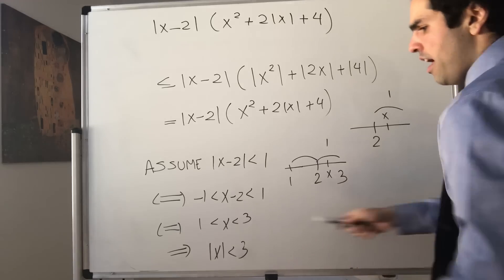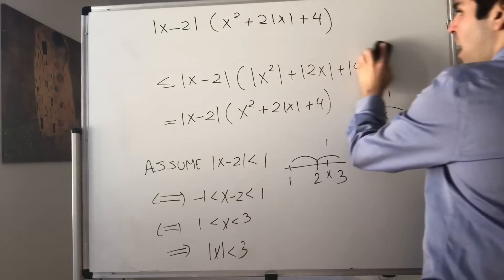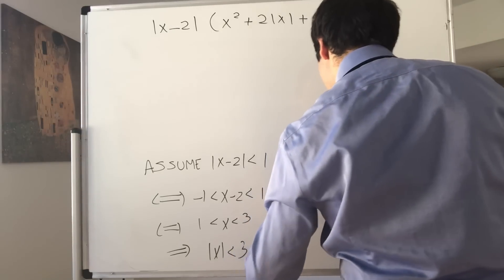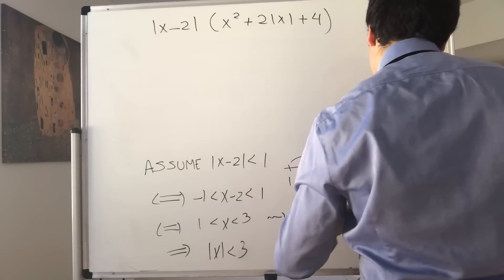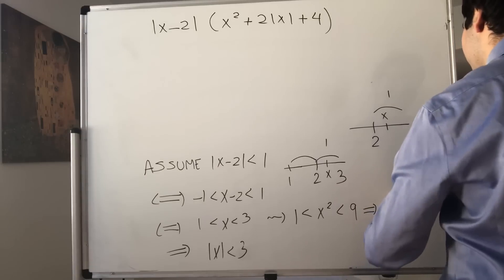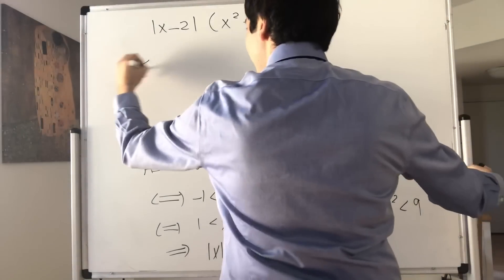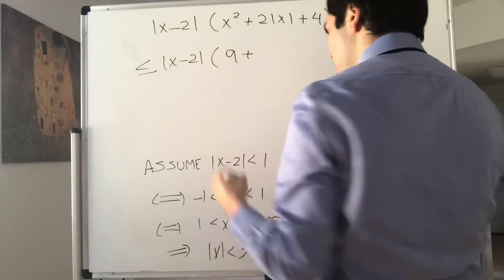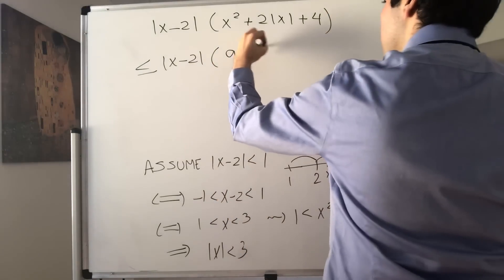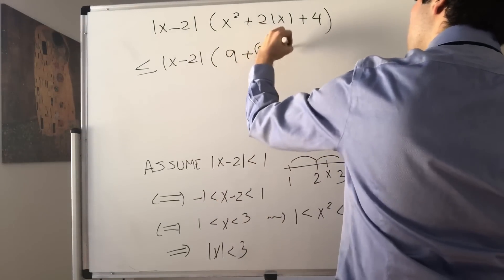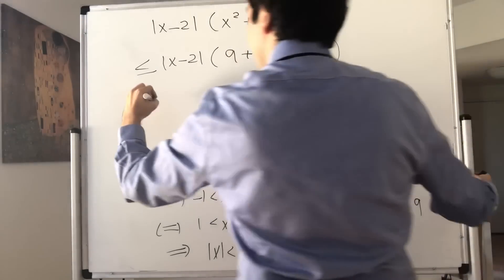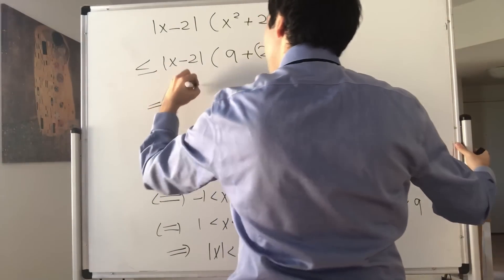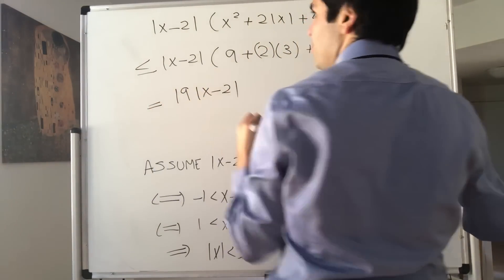X squared is less than 9 because it's between 1 and 9. So x squared is definitely less than 9. This thing definitely becomes less than or equal to x minus 2 times 9 plus 2 times 3 plus 4. So 9 plus 6 is 15 plus 4 is 19. This becomes 19 times x minus 2.